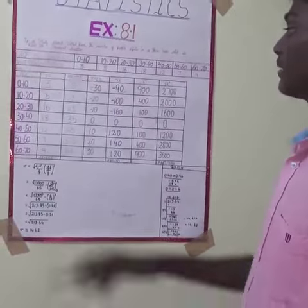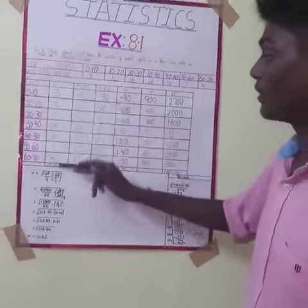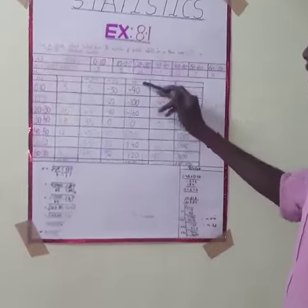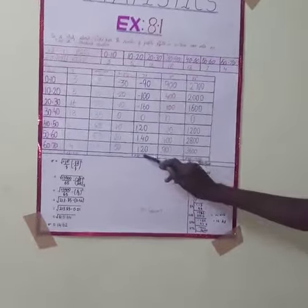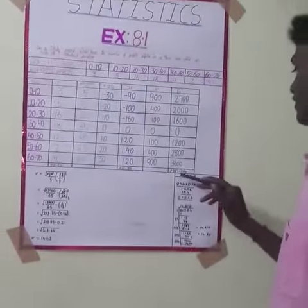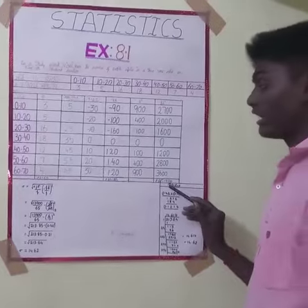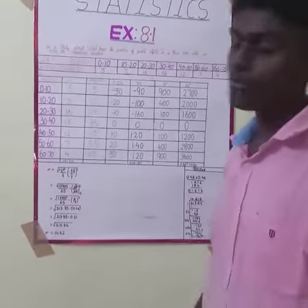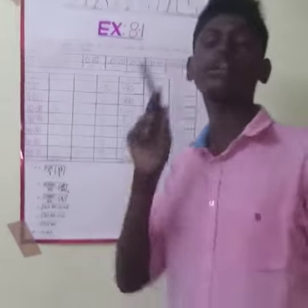We can add up the F values. Summation F is equal to 65, summation F·D is equal to 30, summation F·D² is equal to 13,900. Using the standard deviation formula, we take the square root of summation F·D.